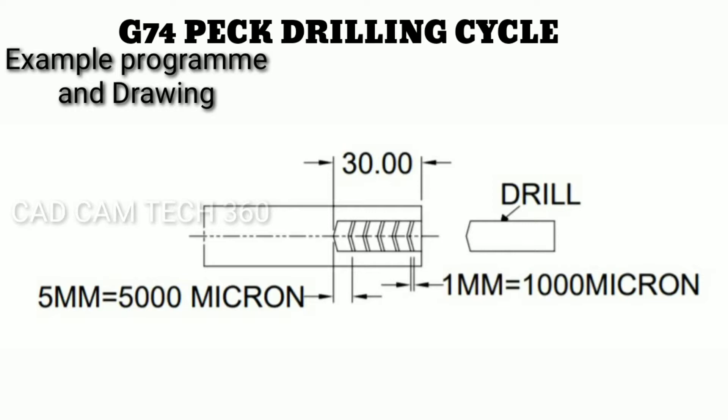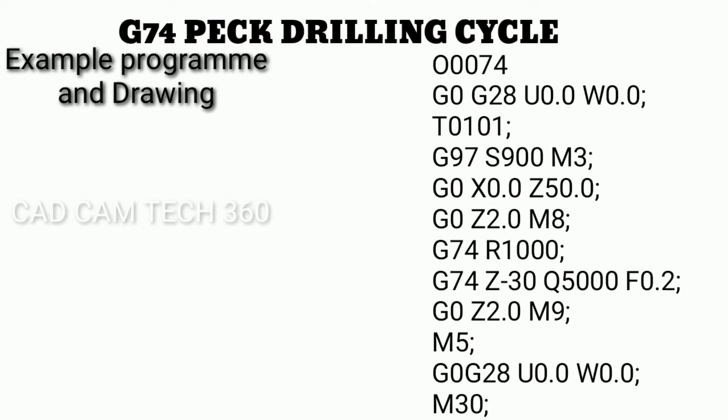I give 1000 microns, meaning 1mm retract. Then it goes again to remove material up to 5mm per peck. It will cut material in one peck and continue up to 30mm total depth. This is the drilling cycle program — you can apply this directly in the machine.